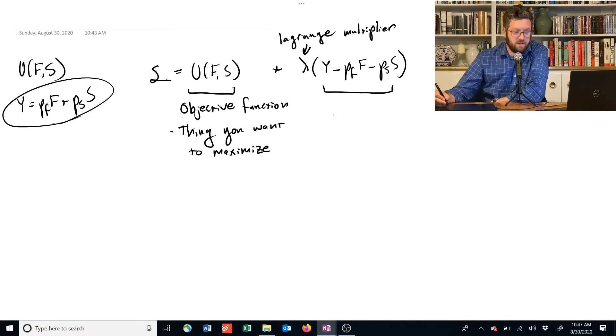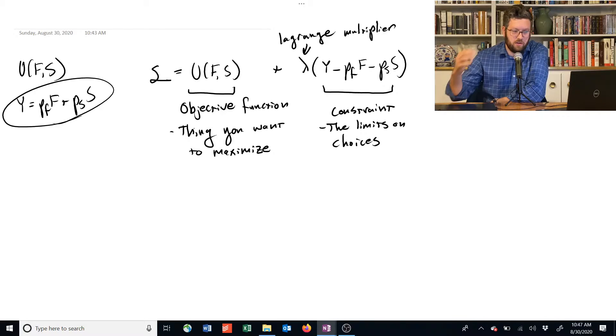This in here is the constraint. It's an equation that limits your choices. So we need this constraint to be satisfied. By that, I mean that it essentially has to be a positive number, or not a positive number. It has to be non-negative.